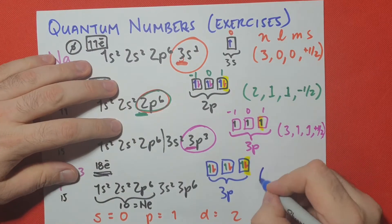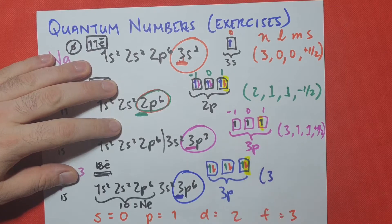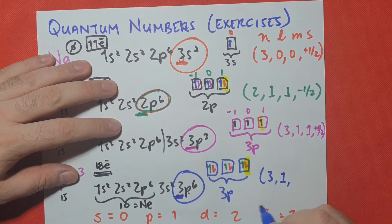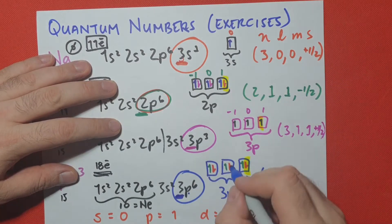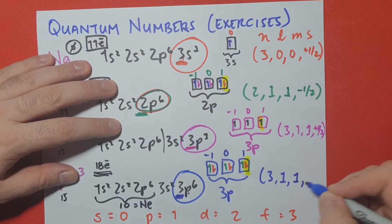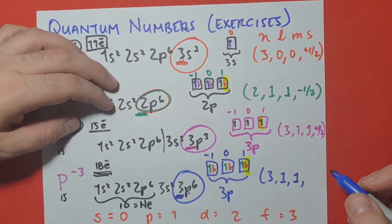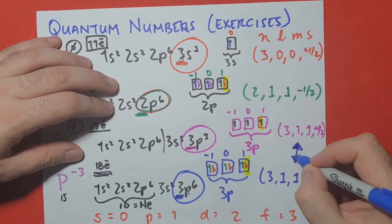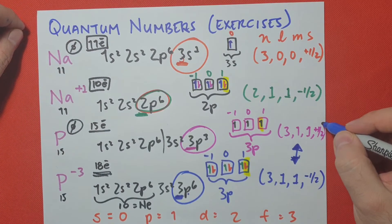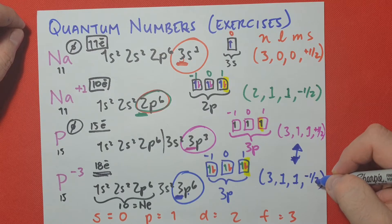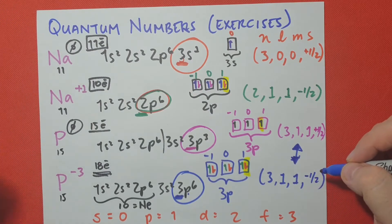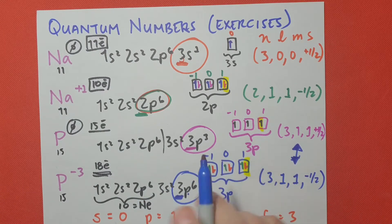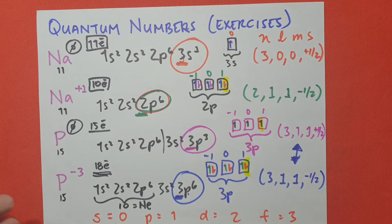And again, our quantum numbers are going to be 3, because this is my highest level. Then it's p, p is 1. Then we have our magnetic quantum number. This is the last box. So it's a 1 again, and it's pointing downwards. So since it's pointing downwards, it's negative one half. And see, these were almost identical. But they're not identical, because one is the upward spinning electron, and the other one is the downward spinning electron. And remember, no two electrons can have the same set of quantum numbers. And we're looking at the last electron that we filled.